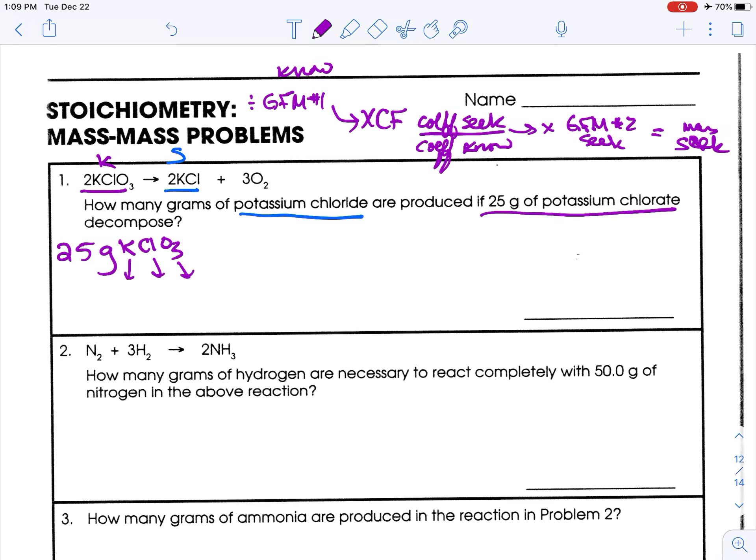So we need to figure out GFM. So potassium is 39. Chlorine is 35. And oxygen is 16 times 3. 16 times 3 is 48. So add those values up. 39 plus 35 plus 48 is 122. So for the sake of keeping things organized, I'm going to erase this here.